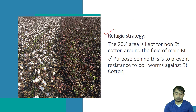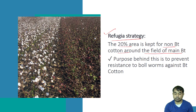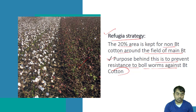Now we will talk about the refugia strategy, which is related to BT cotton. Refugia strategy means that 20% of the area must be kept for non-BT cotton around the main BT cotton crop. The purpose is to prevent resistance in boll worm against BT cotton. The non-BT area is favorable for the boll worm, so they will attack and feed there.